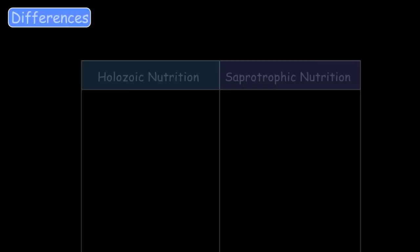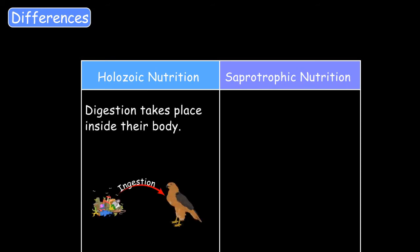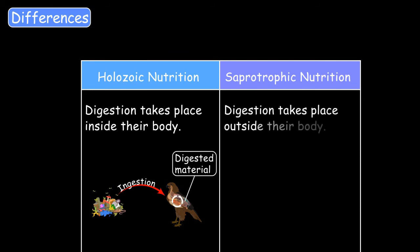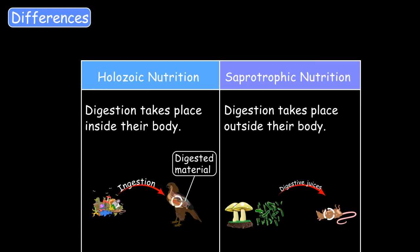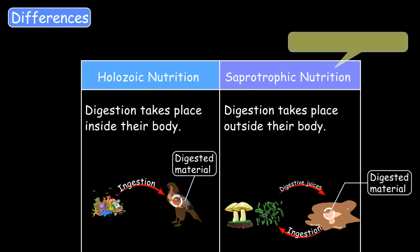The main difference from holozoic nutrition is that in holozoic nutrition, digestion takes place inside the body, whereas in saprophytic nutrition, digestion takes place outside the body. They secrete digestive juices onto the dead material, it is digested externally, and the digested juices are then absorbed by saprophytes. Saprophytic nutrition is also called lysotrophic nutrition.